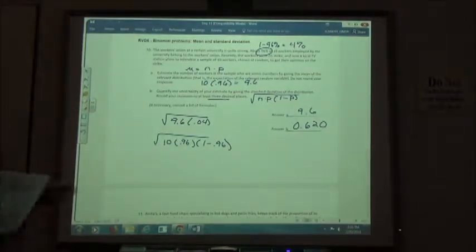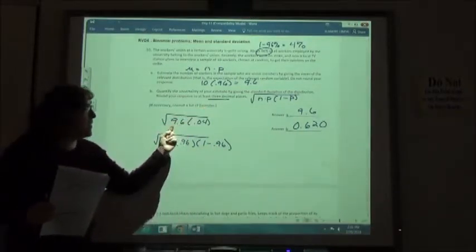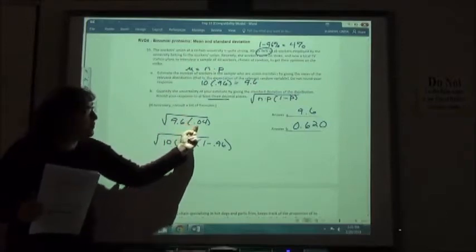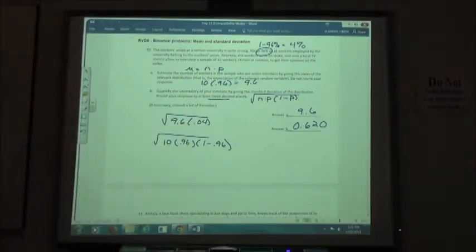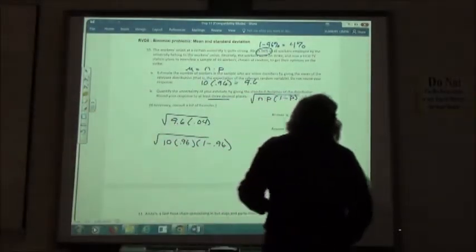So again, that's the long way of interpreting the formula. But we've already found the NP for answer A. And then we can just subtract from 100% to get that second part. Unless you want to do it the long way. You can get the same answer either way.